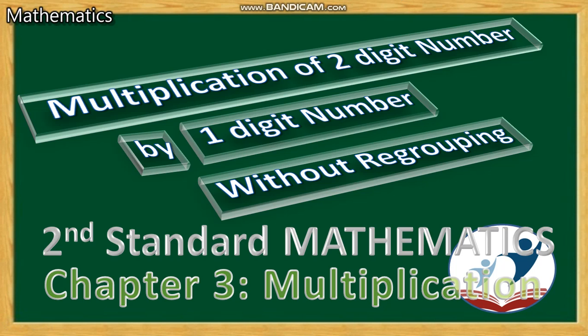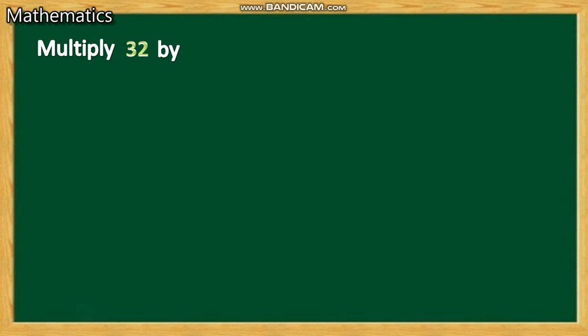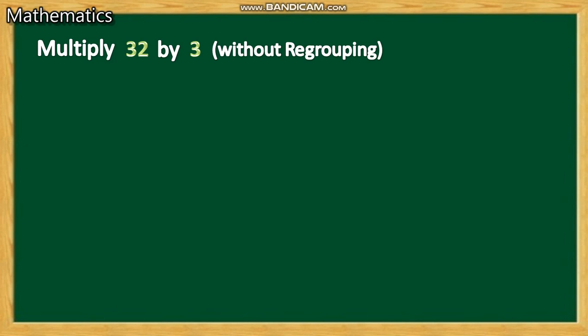Let's check. First, I am giving a question to you. Please read: multiply 32 by 3. How can we multiply 32 by 3, or 32 threes? What will be the answer? We are doing this without regrouping.